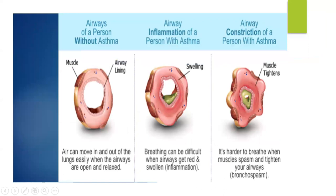This photo is a good representation of the inflammation involved in asthma. You can see a normal airway — nice and open, with air easily moving in and out. Then you can see the inflamed airway: the bronchiole is swollen and inflammation causes less space, making breathing difficult when the airways get red and swollen. Then with airway constriction in asthma, the airways constrict even further, with muscle spasms tightening the airways and making it harder and harder to breathe.